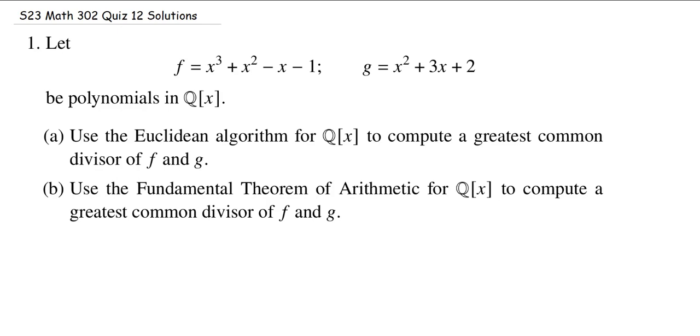Hey everybody, welcome to our first video solution from Quiz 12, Spring 2023, Math 302 at Cal State Fullerton. In this problem, we're jumping back to our standard on divisibility results for polynomial rings over fields. We're given two polynomials f and g, viewing them as polynomials over the rational numbers. Our goal in both problems is to compute a greatest common divisor of these two polynomials, and we're going to do it in two different ways. In the first one, we're going to use the Euclidean algorithm. The second will factor using the fundamental theorem of arithmetic.